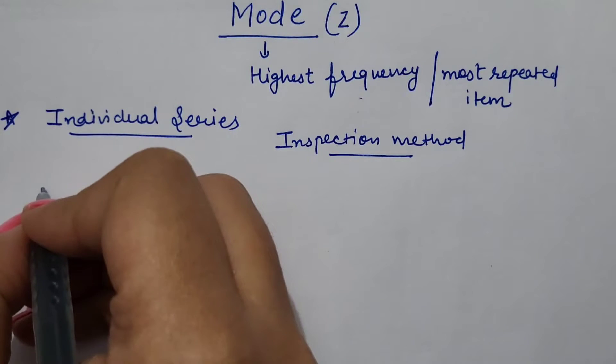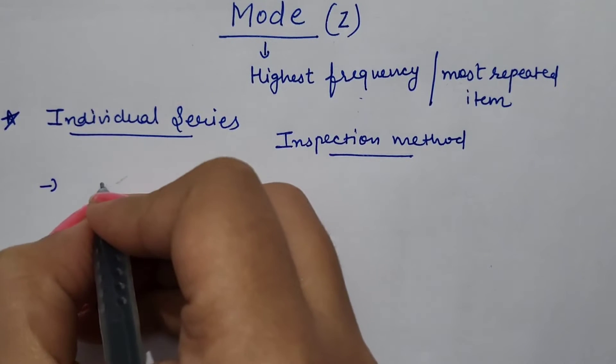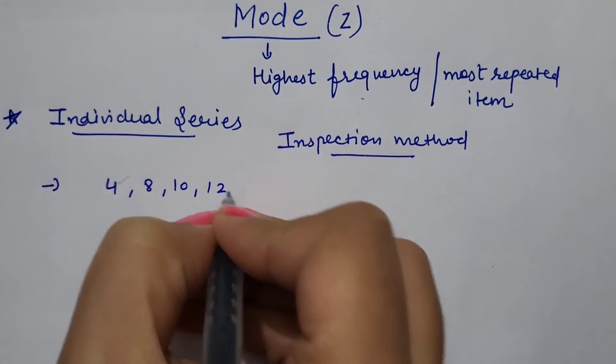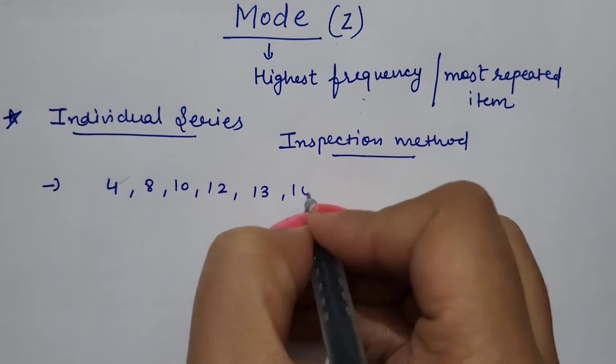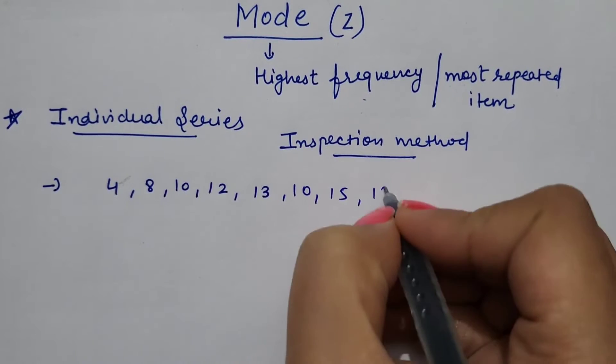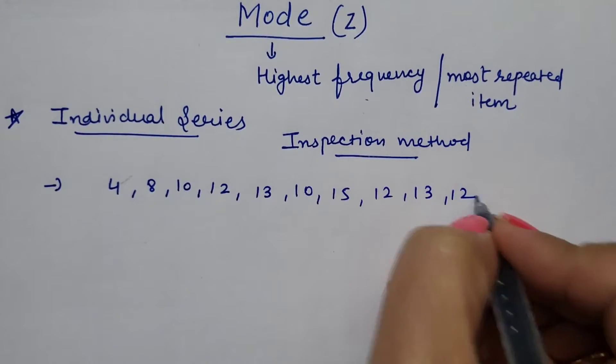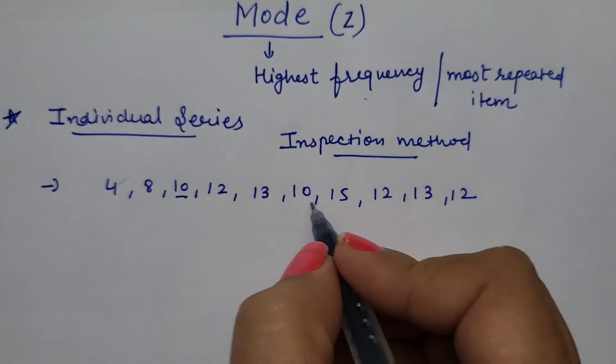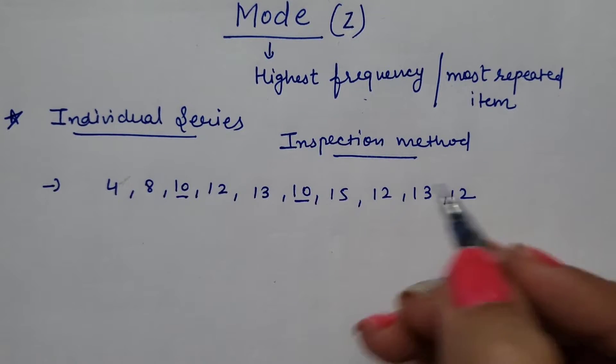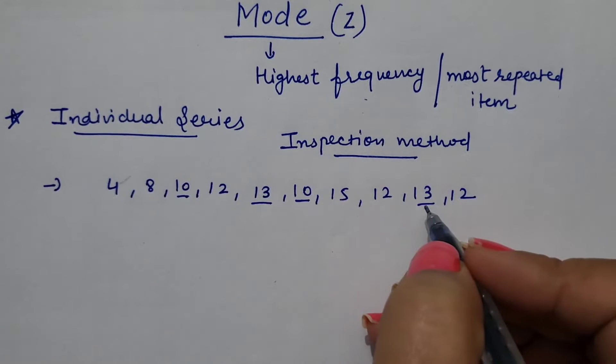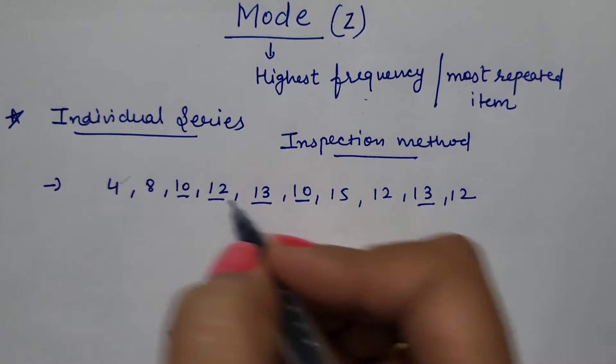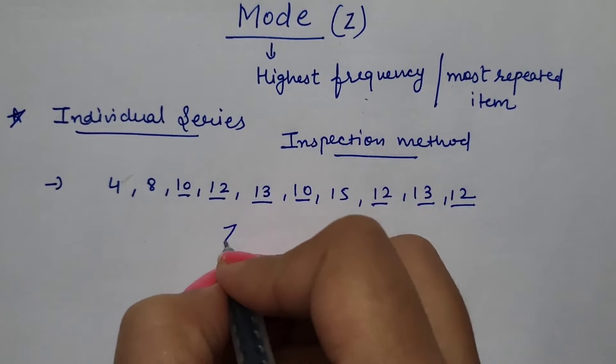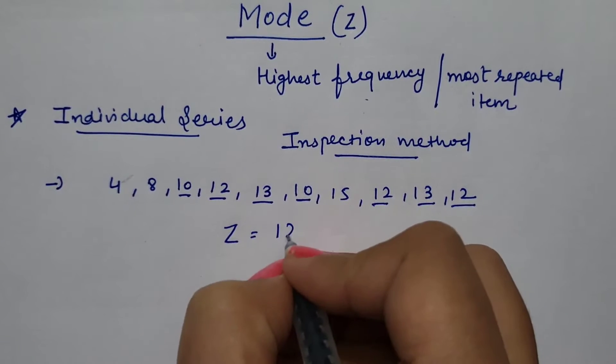We can judge the mode value of the series by inspection. Suppose we are having items like 4, 8, 10, 12, 13, 10, 15, 12, 13 and 12. Just by inspection, it is clear that 10 is repeating 2 times whereas 13 is also repeating 2 times. But here 12 is 3 times. So, mode is equal to 12.